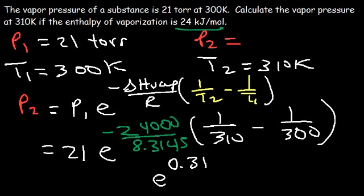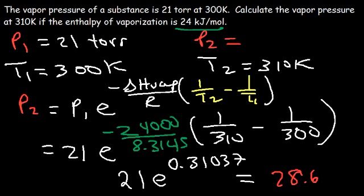So we have E raised to 0.31037. Note: I'm typing in exact values in the calculator rather than rounding in between steps — if you round intermediate answers, your result may differ slightly. E^0.31037 is approximately 1.3639, and multiplying by 21 gives a new vapor pressure of 28.6 torr at 310 Kelvin.